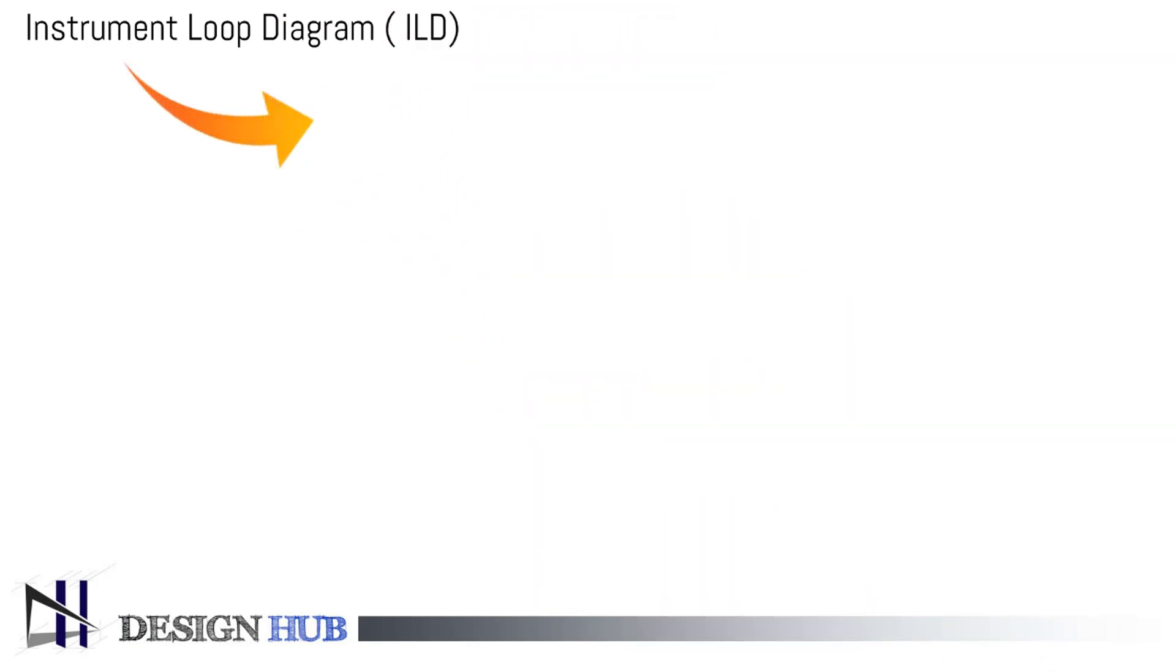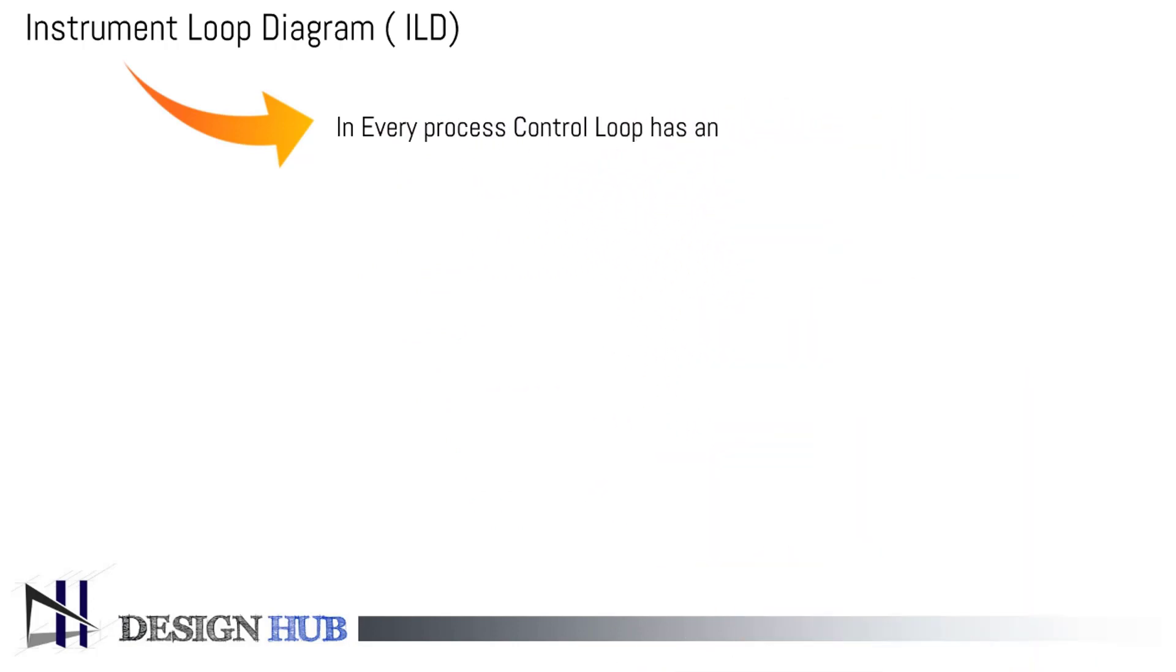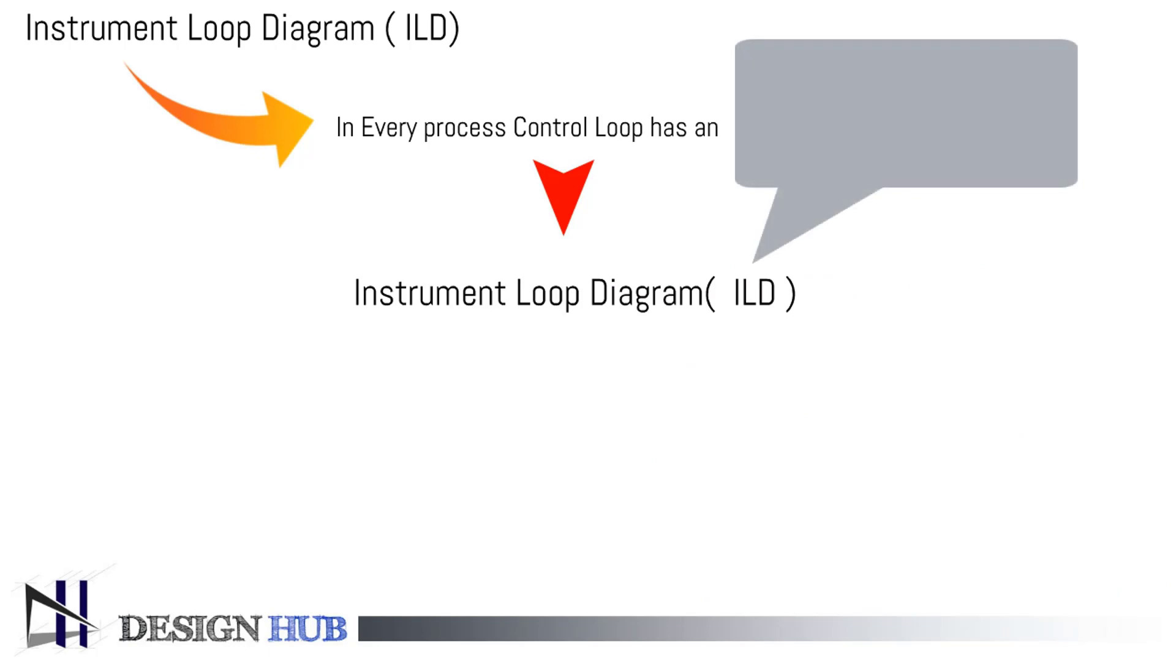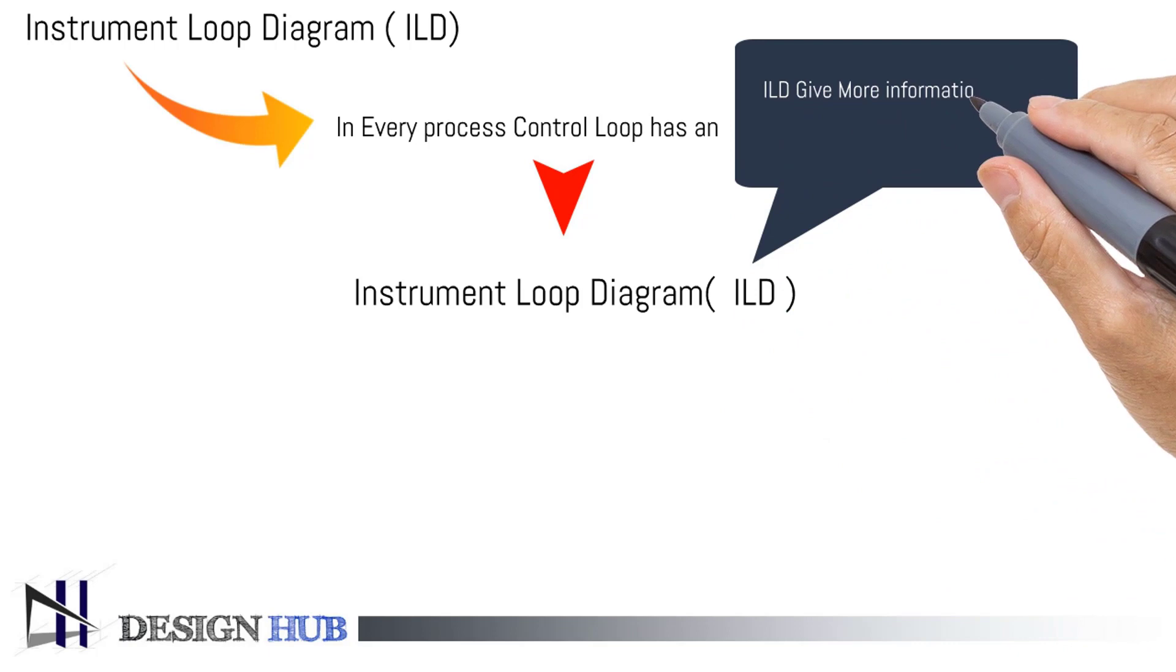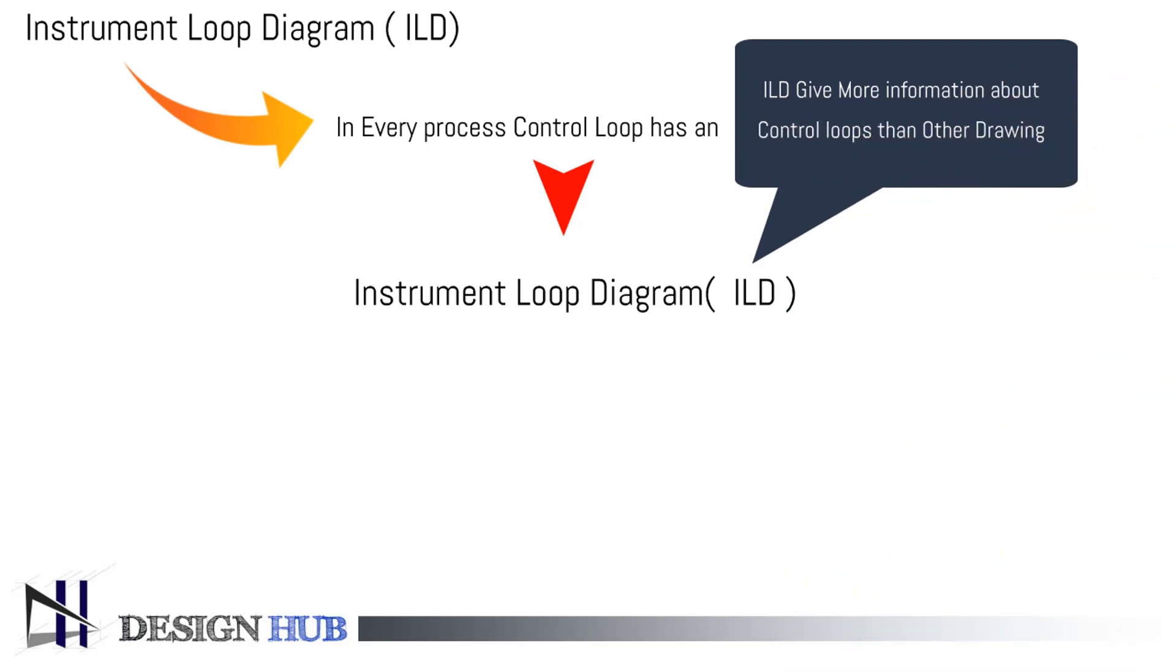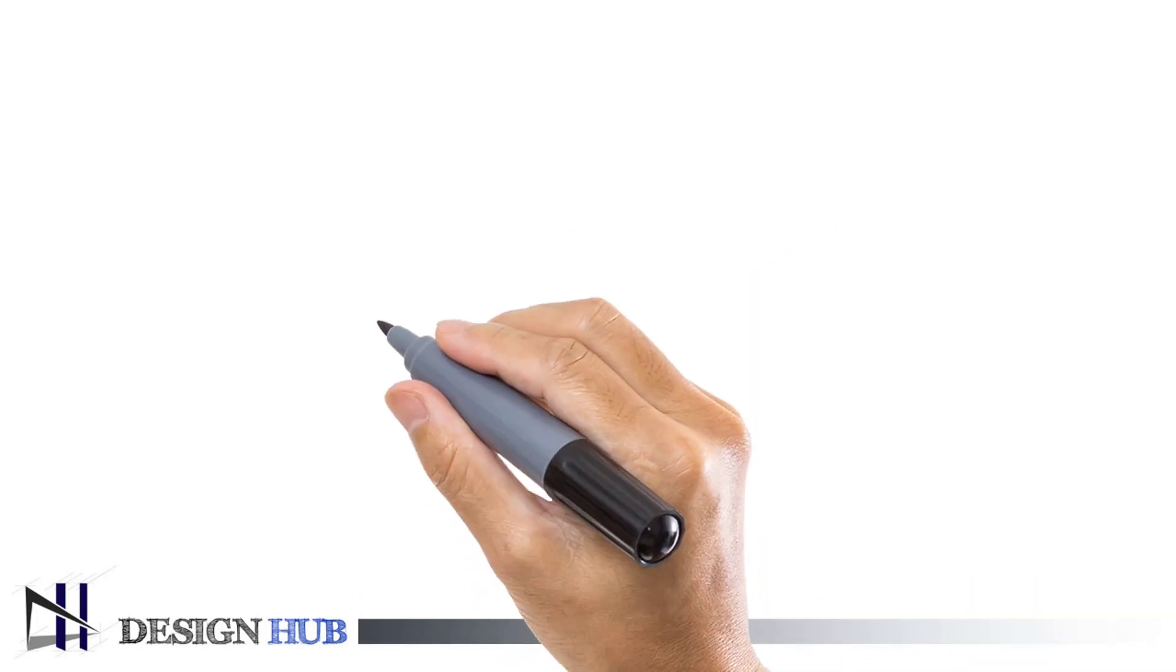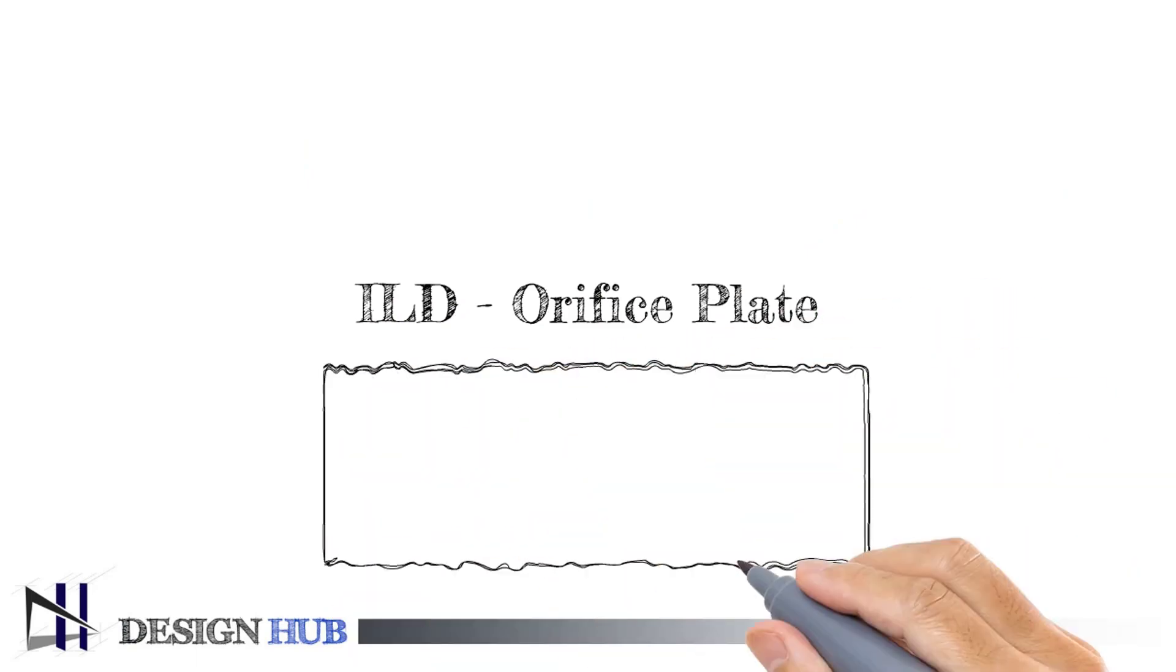Instrument loop diagrams are used in every process control loop. These drawings give maximum information about instrument control. These drawings are helpful for instrument engineers and instrument technicians. Now we will learn about orifice plate instrument loop diagrams.